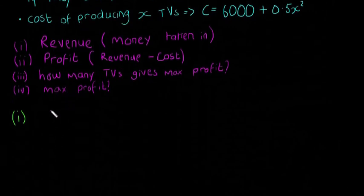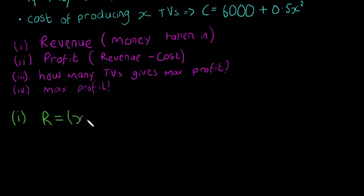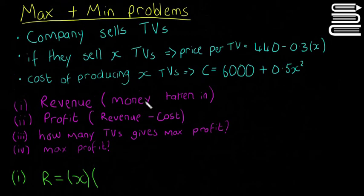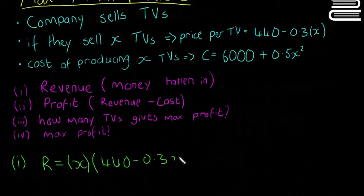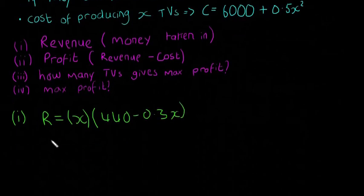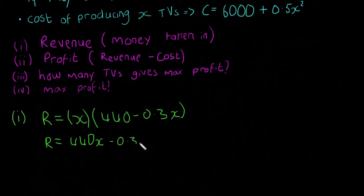So if we sell x TVs, so I'm going to say R. It's going to be equal to the amount of TVs we sell, which is x, multiplied by the price of each TV, which is 440 minus 0.3x. And then that's going to give us that R is equal to 440x minus 0.3x squared. Hopefully that's clear.